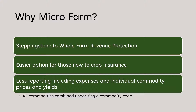This program was designed as a stepping stone into the regular whole farm revenue policy. The hope is that a couple of years of less intensive reporting helps people new to crop insurance get comfortable. By the time your revenue exceeds $100,000, you're ready for the more intensive reporting. They're also allowing growers who had the micro farm policy this year — if their revenue went above $100,000 — to keep this policy for one more year.